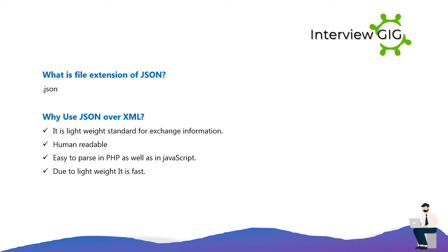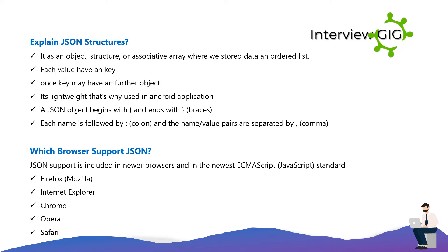Why use JSON over XML? It is a lightweight standard for exchanging information. It is human readable, easy to parse in PHP as well as in JavaScript, and due to its lightweight nature it is fast.